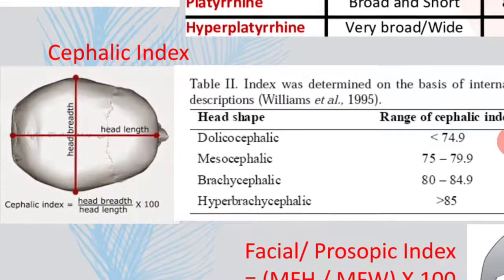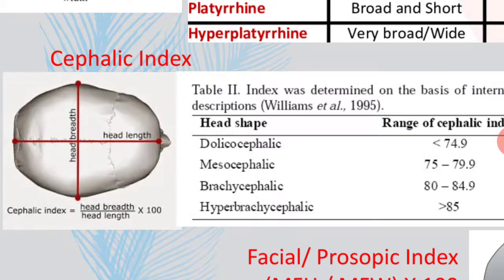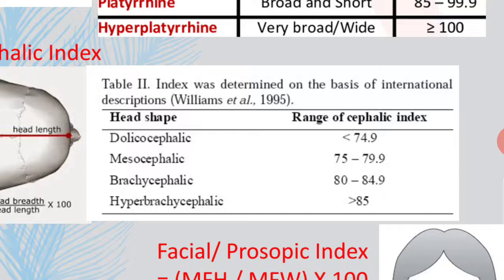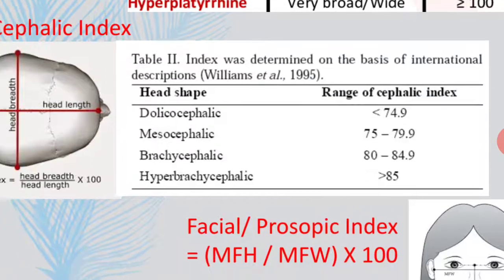Next is the cephalic index, calculated by dividing head breadth by head length and multiplying by 100. Head length is measured from the temple to the back of the head, and breadth is measured as the distance between the two ears. This cephalic index is classified into four range groups: dolichocephalic (long head), mesocephalic (medium), brachycephalic (broad head), and hyperbrachycephalic (very broad head).